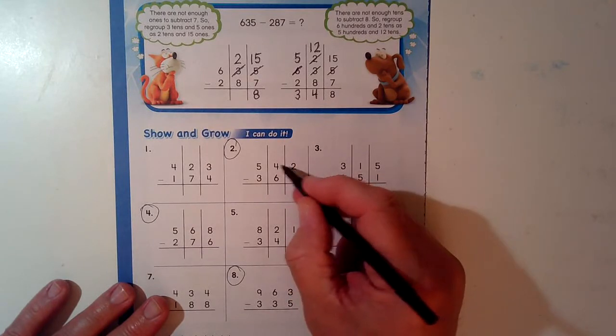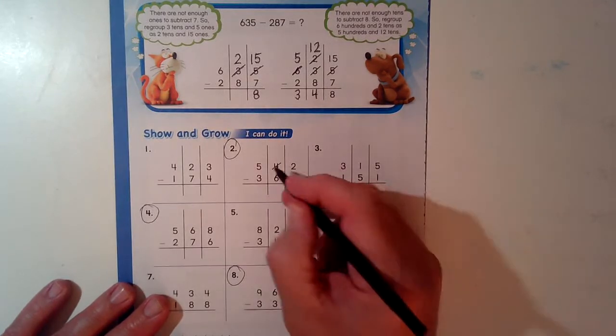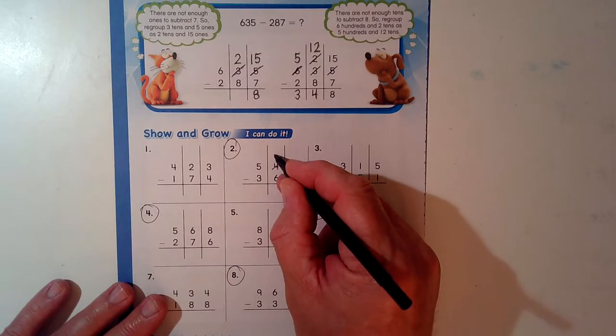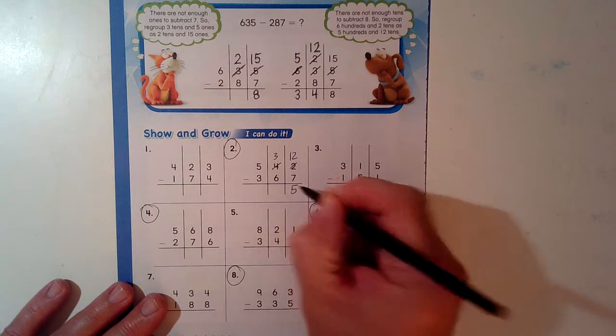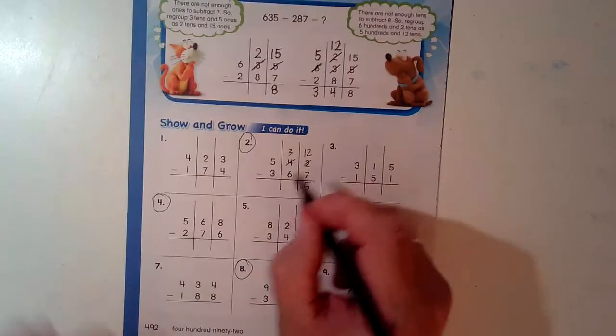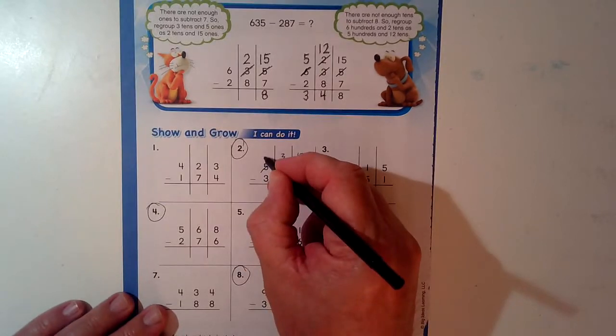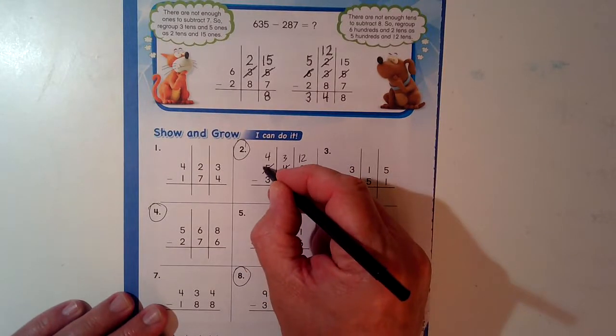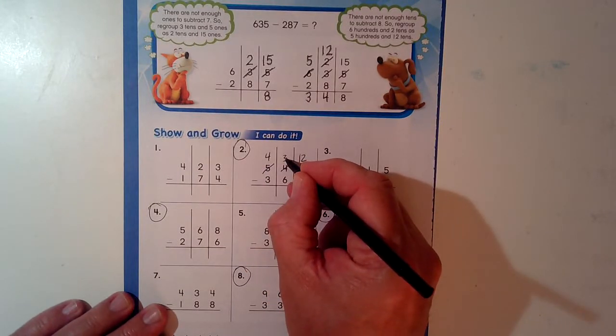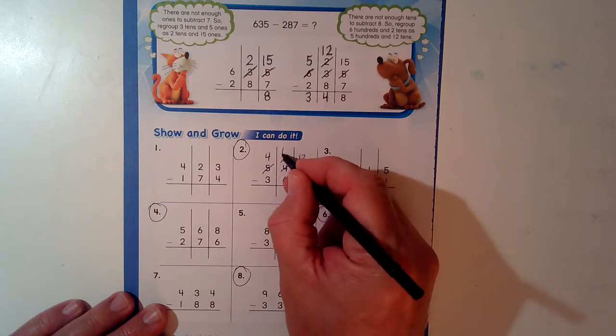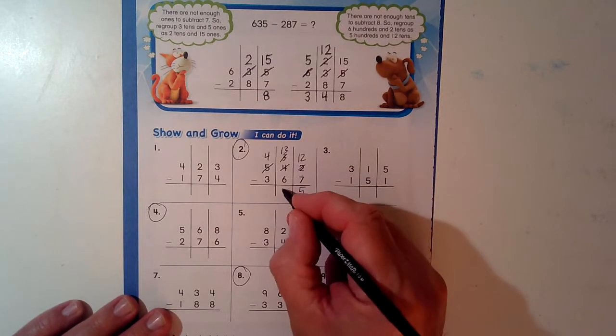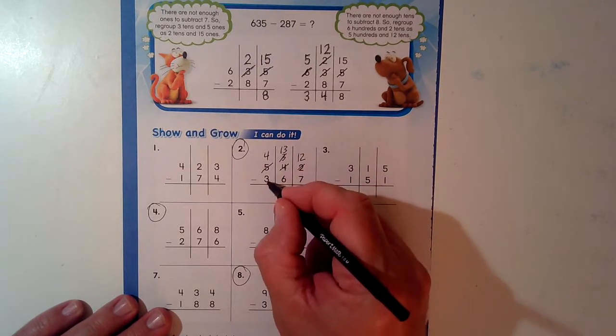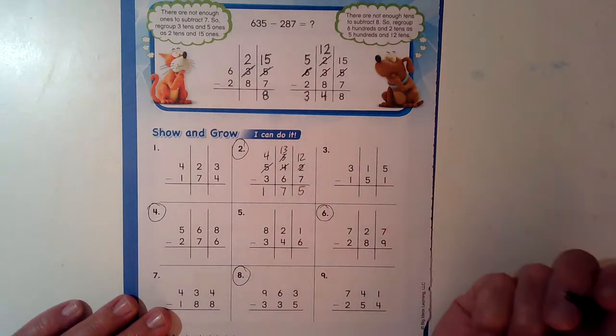If I have 2, can I take away 7? No. I take away or I borrow from here. That becomes 3. This becomes 12. 12 minus 7 is 5. 3 minus 6. Can't do it. Take away from here. Borrow one of the sets of 10 and I put it with this 3. It's not 3 anymore. Now it's 13. So I have 13 minus 6, that's 7. 4 minus 3 is 1. 175.